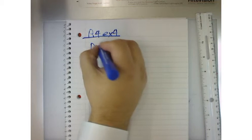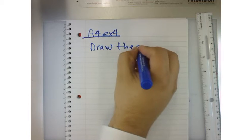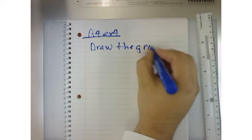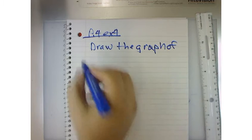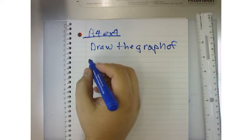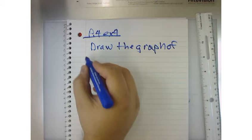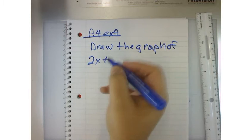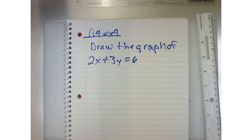we're asked to draw the graph of 2x plus 3y equals 6.